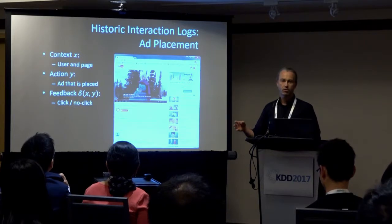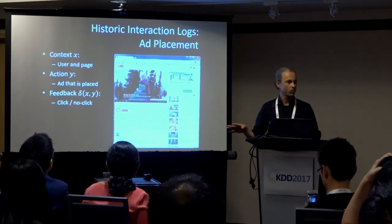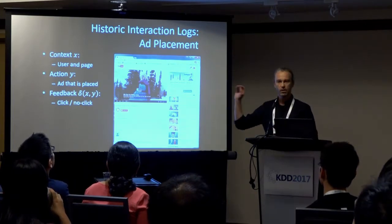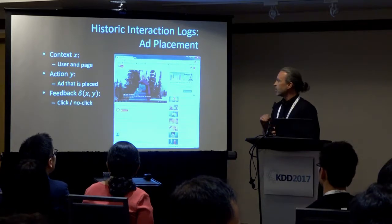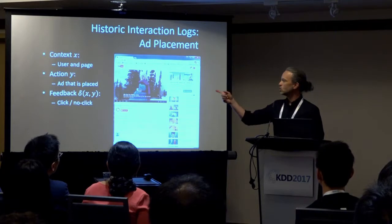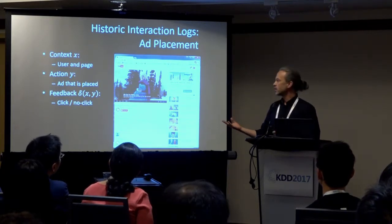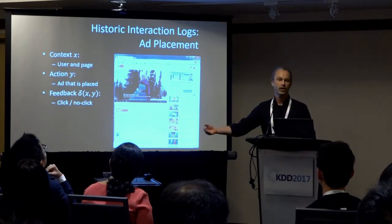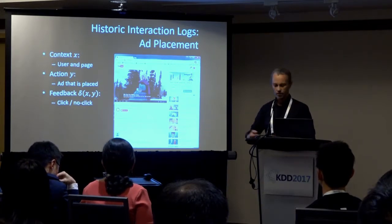The feedback could be anything — any number. Click-through rate is not necessarily the preferred measure to optimize, but whatever that measure is, this is the feedback we'll have. What's interesting is that the system could have taken many other actions. We don't actually get to observe what would have happened if the system had picked a different action — how would the user have responded to a different ad?